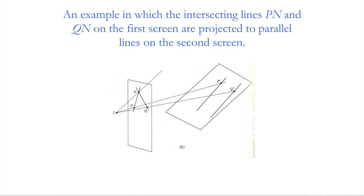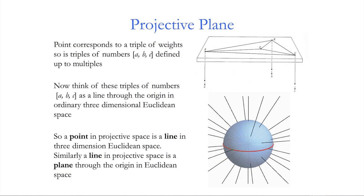Here's the exception: lines PN and QN meet at point N, but the line LN is parallel to the plane we're projecting onto. When you carry out the projection, lines PN and QN project to parallel lines — the intersection point N seems to disappear. Running the rays backwards, a pair of parallel lines on one plane appears to intersect when projected back to point N.